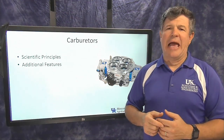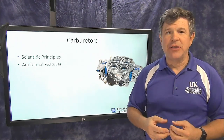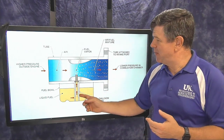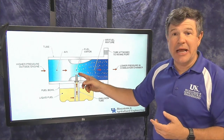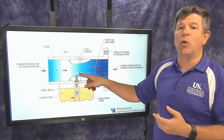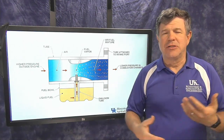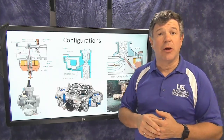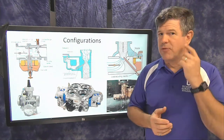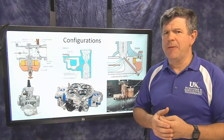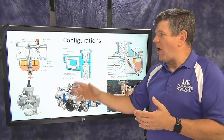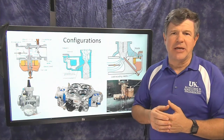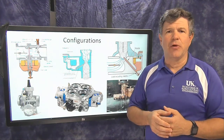In this video we're going to take a closer look at carburetor technology and some of the different features you see on a carburetor. We talked last time about Bernoulli's principle and how a constriction in the airflow causes a negative pressure — a vacuum — which pulls fuel from a reservoir into the airstream. Now we need to understand a little bit more about how these work, the different types of carburetors, and how we control things.